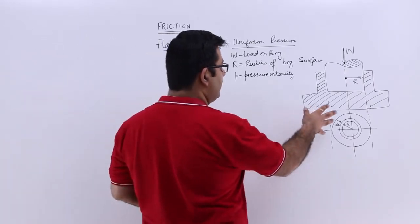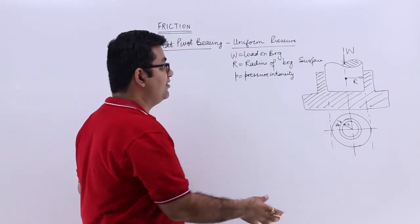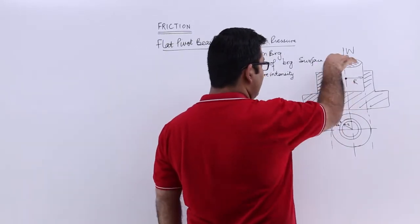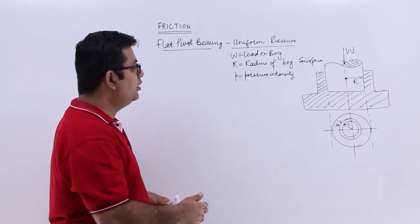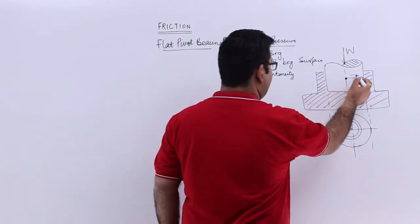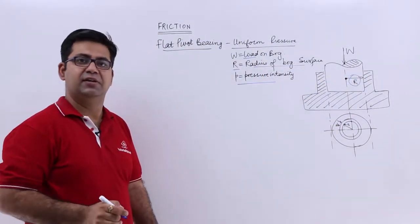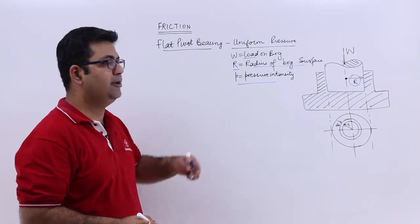So this is how a bearing will look like. This is the stand of the bearing, the body of the bearing. And we have a shaft which is running in this bearing which has an axial load on that. So the load is W which is the loading bearing, R is the radius of the bearing surface, and P is the pressure intensity which is acting on the bearing surface.